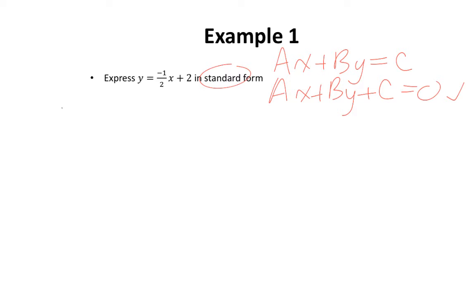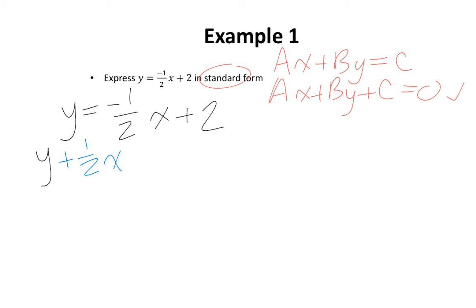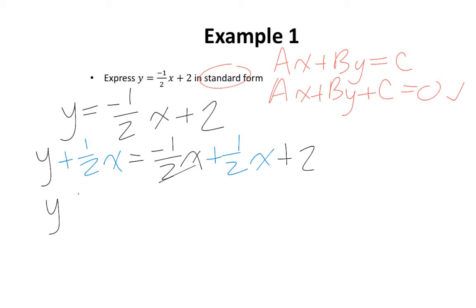Let's begin by rewriting our question. According to standard form, all of our terms need to be on one side of the equation. I'm going to move negative 1 over 2x to the other side of the equation by adding 1 over 2x to both sides. Therefore, negative 1 over 2x plus 1 over 2x cancels out, which leaves us with y plus 1 over 2x equals 2.